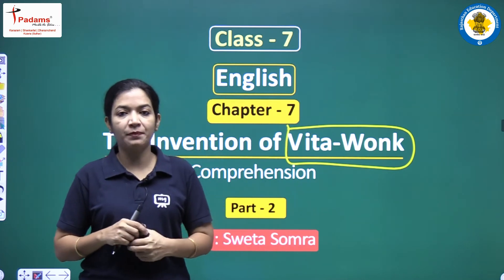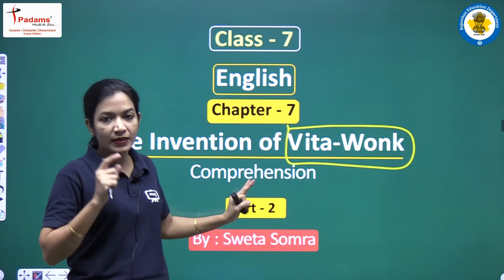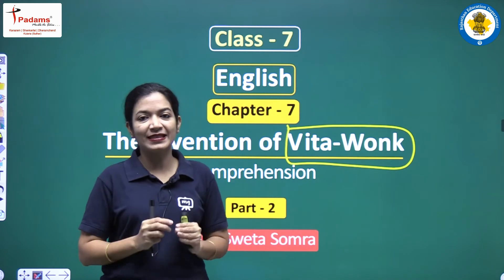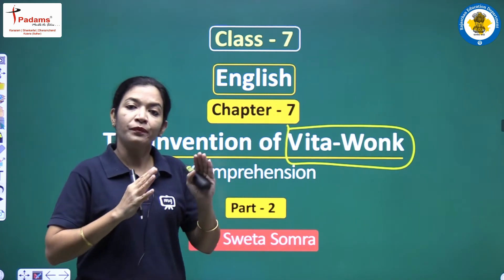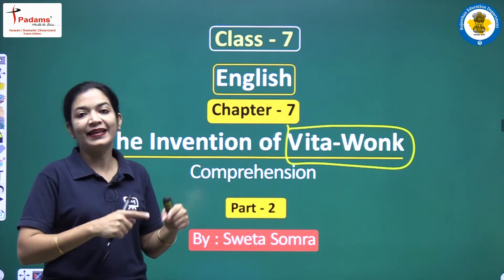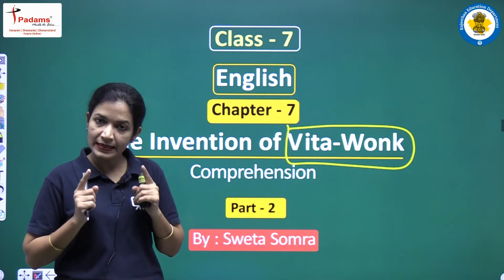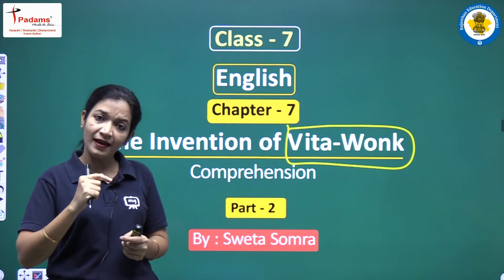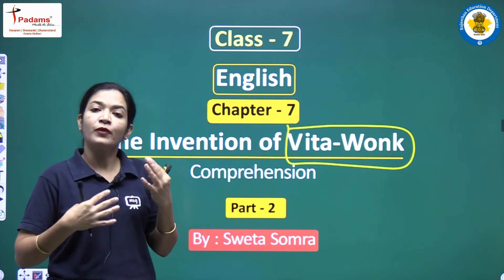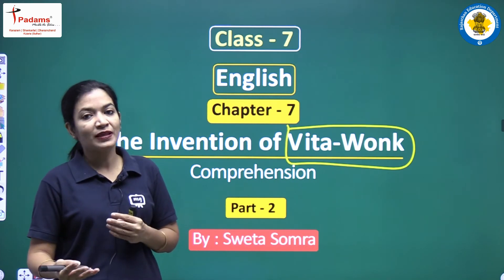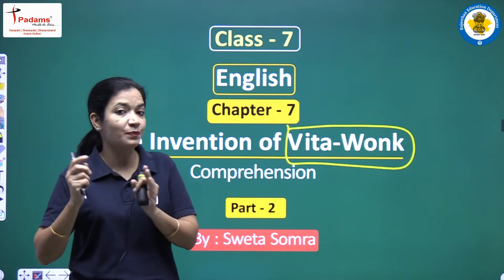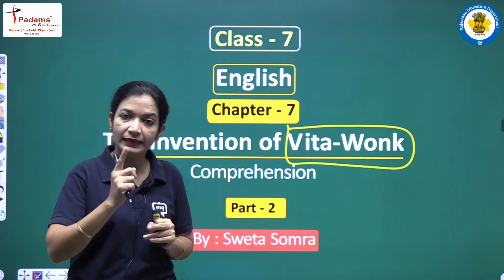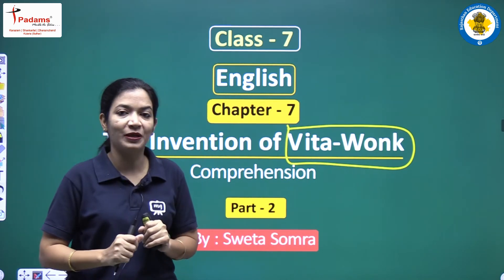Now in this part of the chapter we are going to discuss the first question-answer part, which is comprehension of the part we read in Part 1. We will discuss the question answers related to that part, then we will again read the story and do the question answers of the remaining part. The comprehension we're doing now is from Part 1. I have already summarized Part 1 in front of you right now.